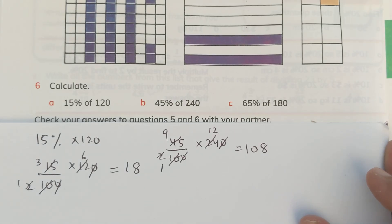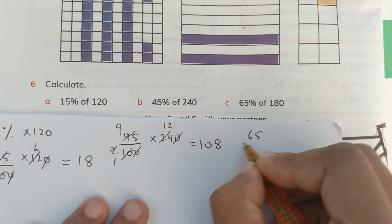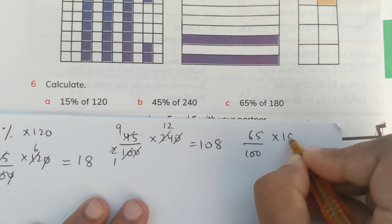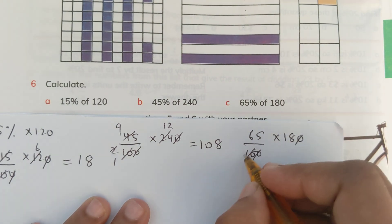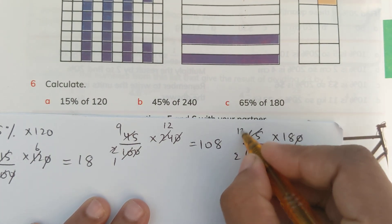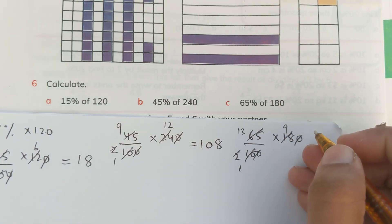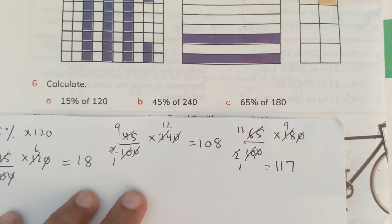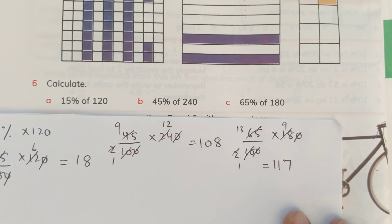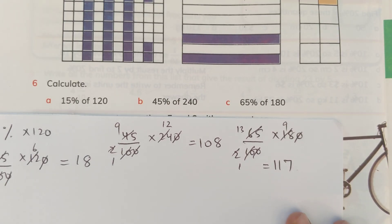Now, the next question says 65% of 180. So, we will do the same thing. 65 over 100 multiply by 180. 0 cuts 0 and then 5, 2's are 10, 5, 13's are 65, 2, 1's are 2, 2, 9's are 18. Now, we will multiply 13 with 9 and that's 117. So, the answer would be 117. That's all. You see how easy it is.